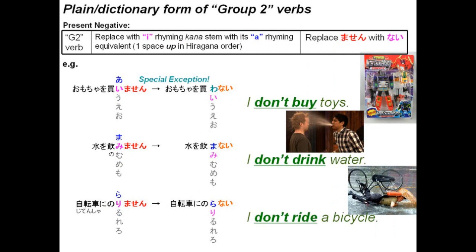To put group 2 verbs into the present negative plain form, we're going to go in the reverse order on the hiragana chart — up instead of down — and masen will be replaced with nai. So let's look at nomimasen. Mi comes second in the order with ma-mi-mu-me-mo. Instead of going down to mu, we're going to go up to ma. So it becomes noma, then we replace the masen with nai. So to not drink becomes nomanai, nomimasen becomes nomanai.